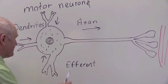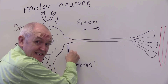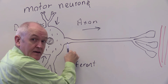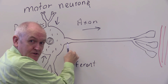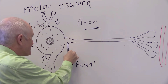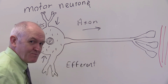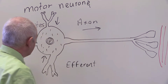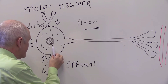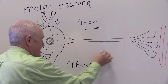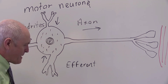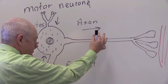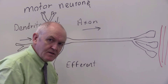This first part of the motor neuron looks like a little hill. Small hills are called hillocks, so that's the axon hillock — it's a small hill. It's the first part of the axon, between the cell body and the axon itself.